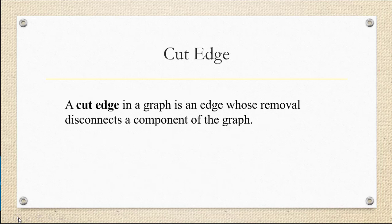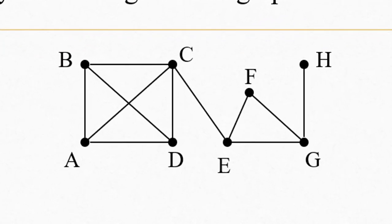Another definition that we're going to need is a cut edge. A cut edge in a graph is an edge whose removal disconnects the component of the graph. For example, in this graph,